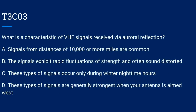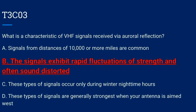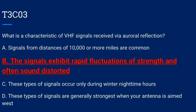T3C03. What is a characteristic of VHF signals received via auroral reflection? A. Signals with distances of 10,000 or more miles are common. B. The signals exhibit rapid fluctuations of strength and often sound distorted. C. These types of signals occur only during winter nighttime hours. Or D. These types of signals are generally strongest when your antenna is aimed west. The correct answer is B: the signals exhibit rapid fluctuations of strength and often sound distorted.